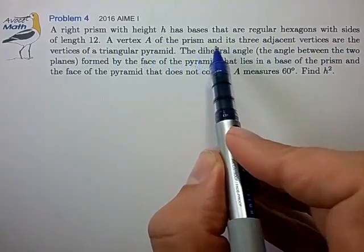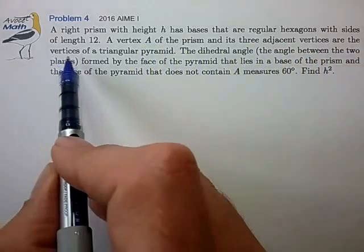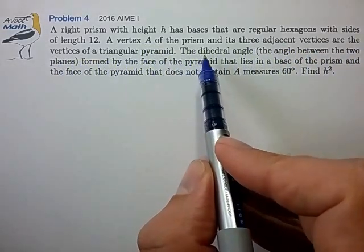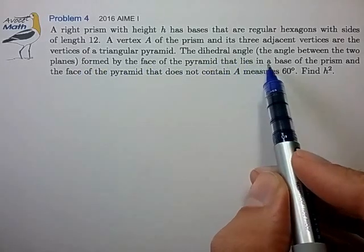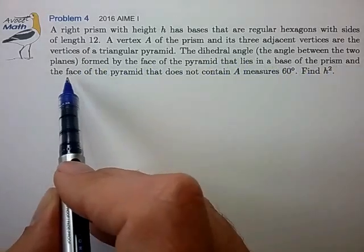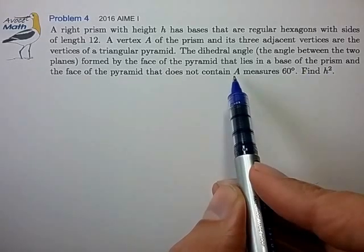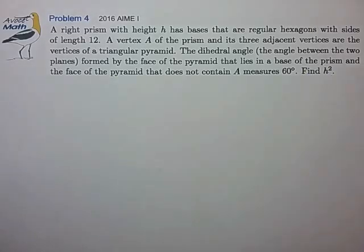Vertex A of the prism and its three adjacent vertices are the vertices of a triangular pyramid. The dihedral angle formed by the face of the pyramid that lies in the base of the prism and the face of the pyramid that does not contain A measures 60 degrees. Find h squared.